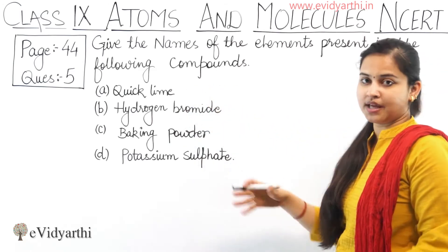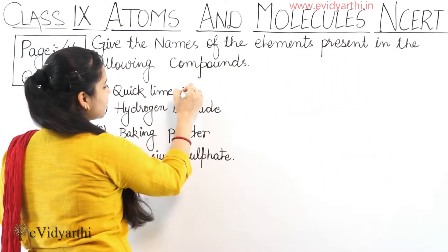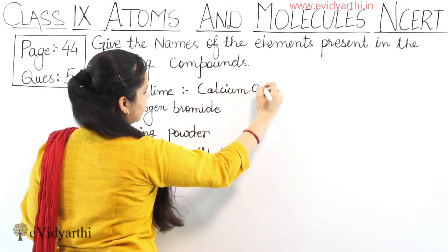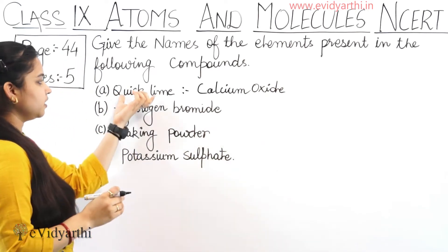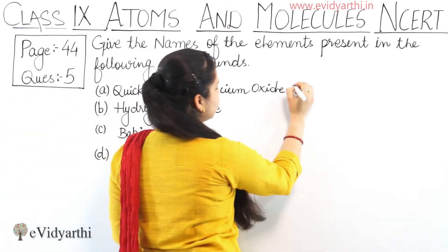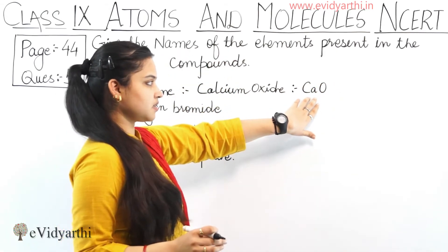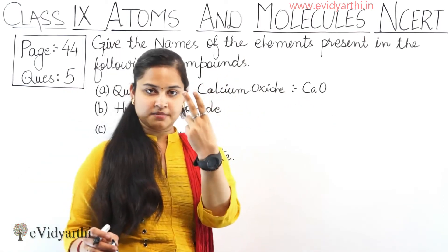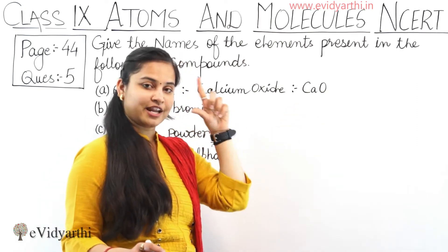What is Quick Lime known as? We can call it calcium oxide. The question asks us which elements are present in this particular compound, calcium oxide. The chemical formula of calcium oxide is CaO. So this compound contains two types of elements: one is Calcium and the other is Oxygen.